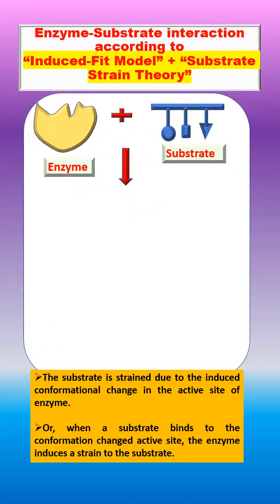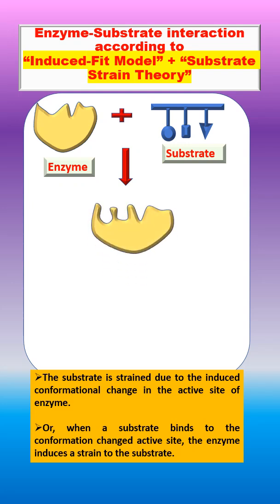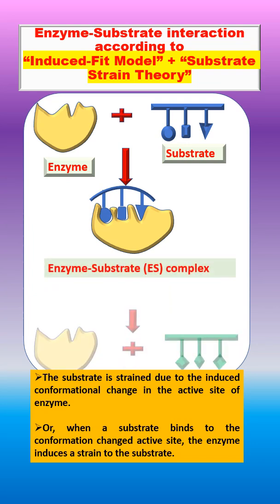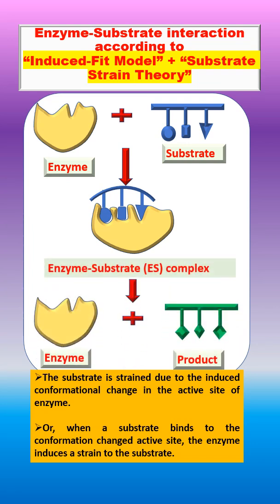We can explain enzyme-substrate interaction according to the induced fit model plus substrate strain theory through this diagram. When the substrate binds with the enzyme, the conformation of the active site is changed and the substrate is strained during ES complex formation. After that, the product is formed.